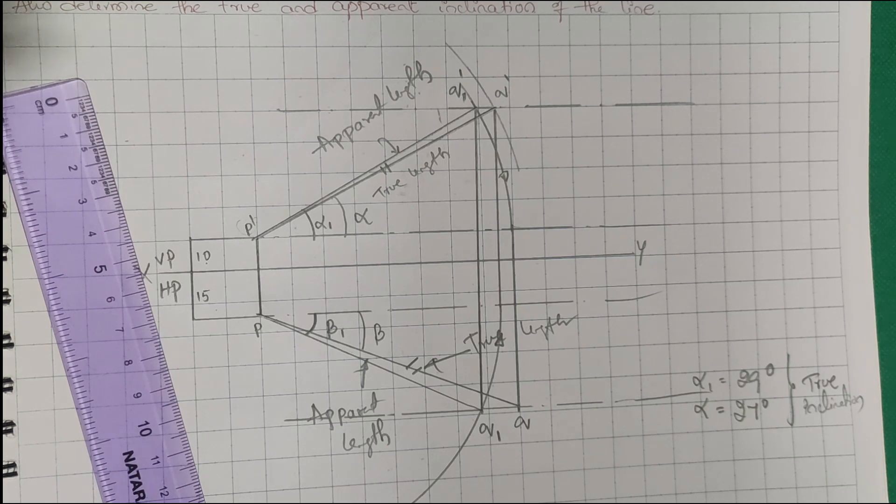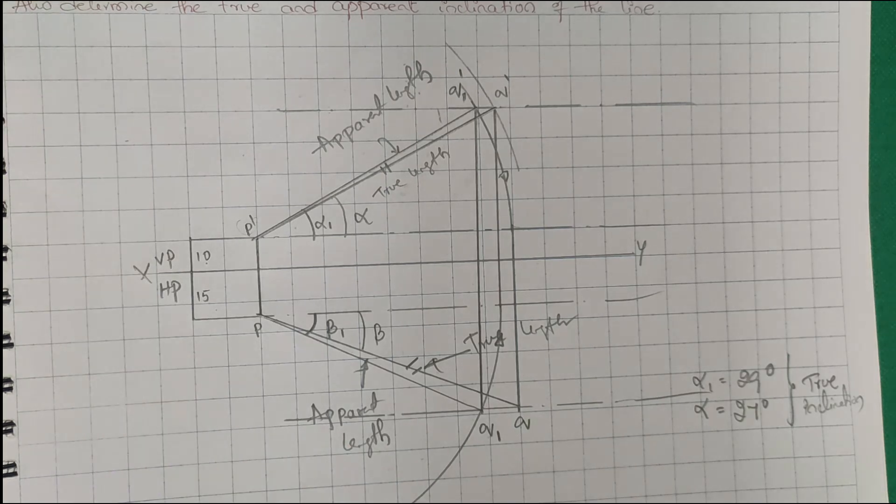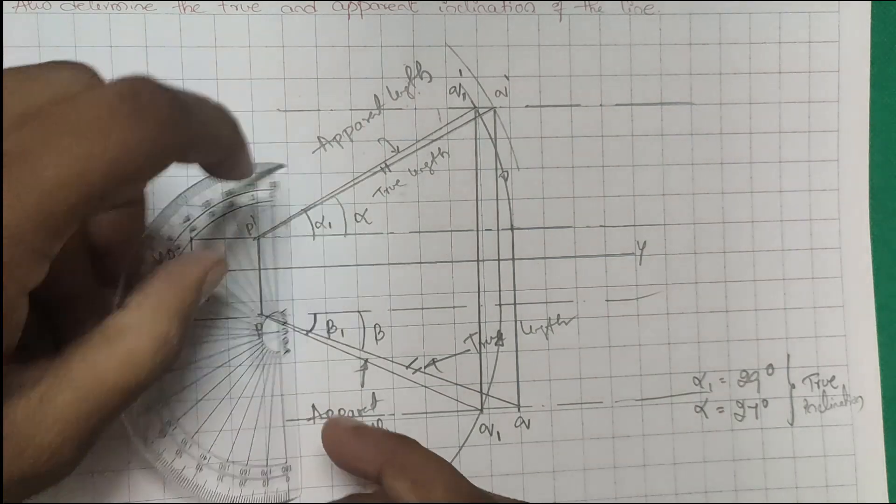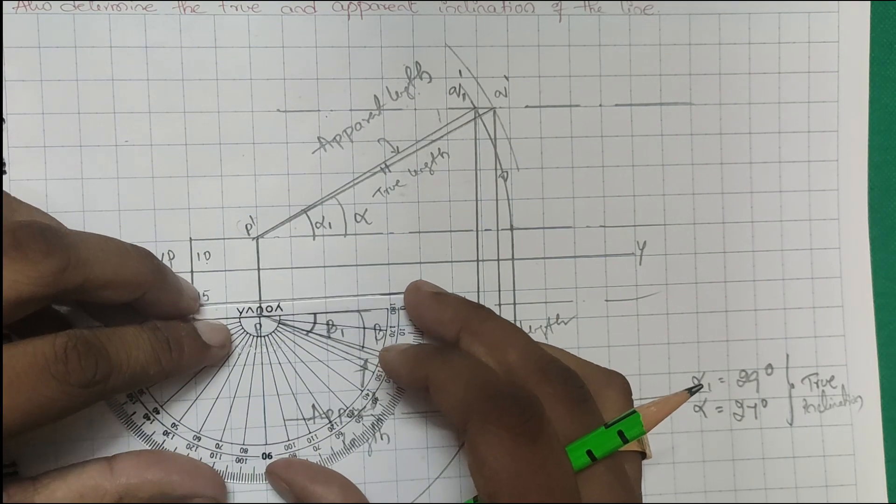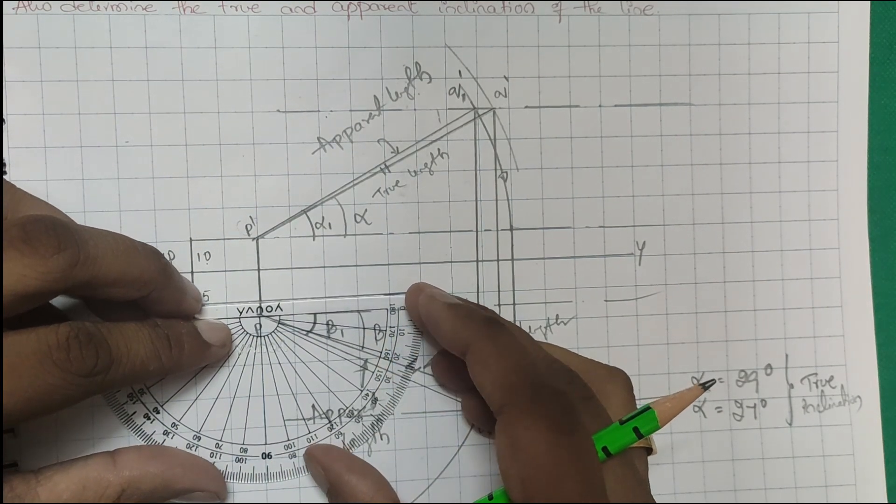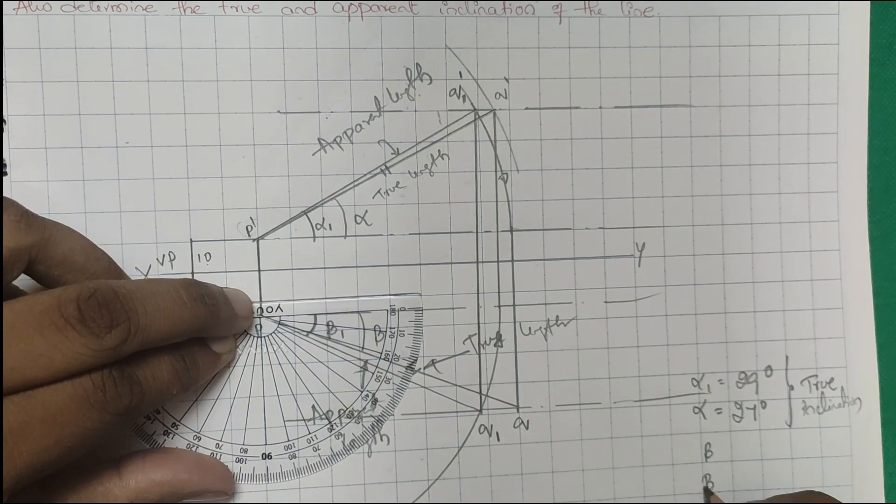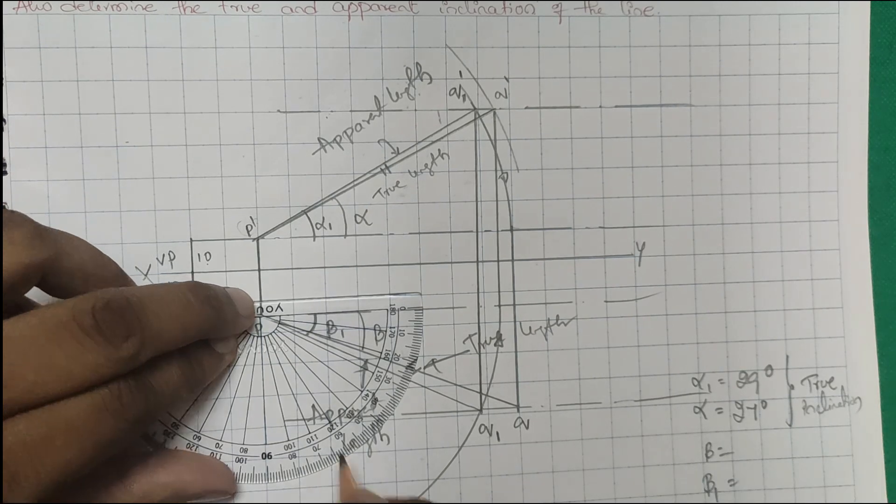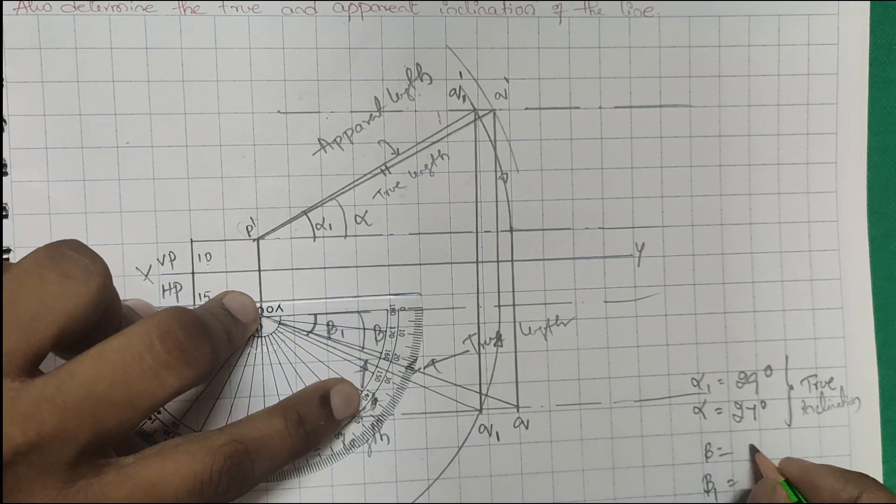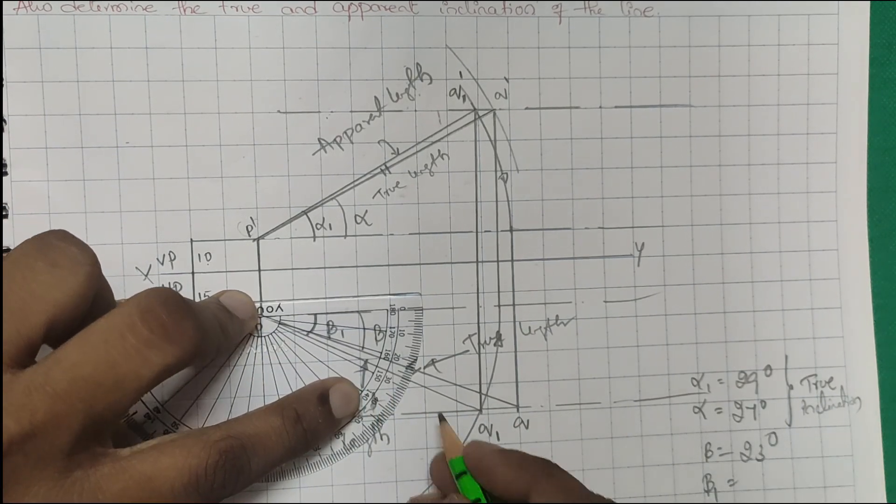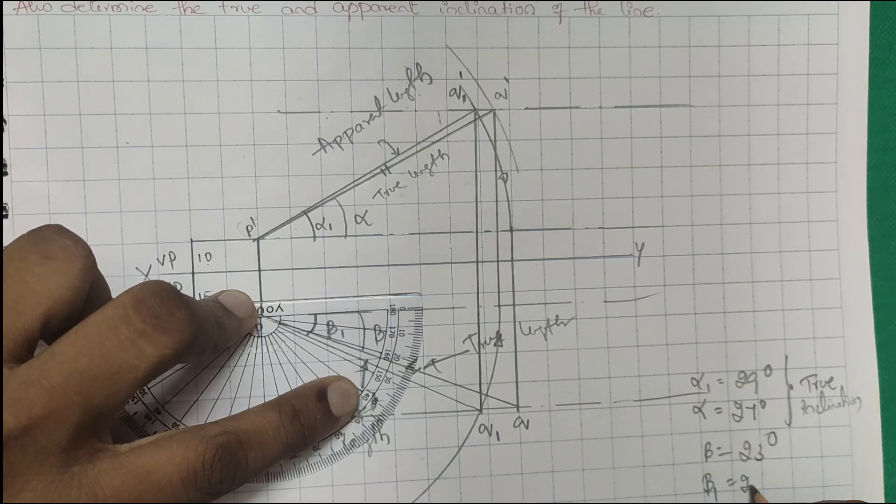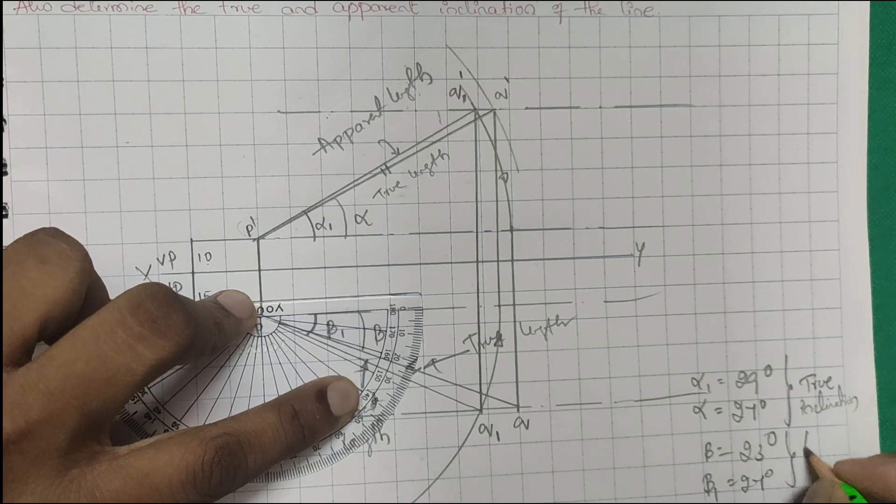Let's see how much you will get for beta and beta 1. Beta is around 23 degrees and beta 1 is around 27 degrees. These are the apparent inclinations.